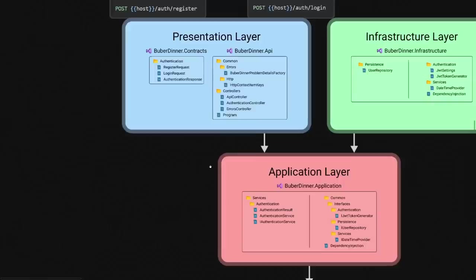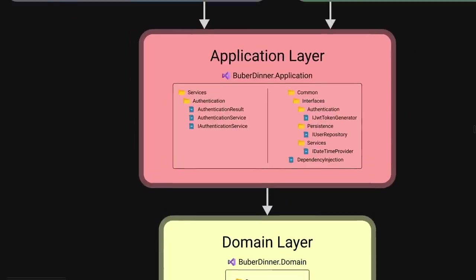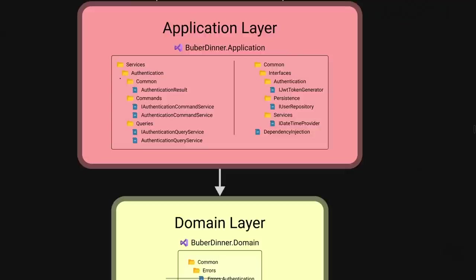We started with a single authentication service and split it into a command service and a query service. But let's think about how this solution will scale. On a large system, these service files can become 7,000 lines of code. Instead of having a single God file, now we'd have two files where each one is also a God file. A better approach is splitting the application layer not by various services but rather by the features or use cases we have — so the application grows horizontally with more isolated features instead of vertically.